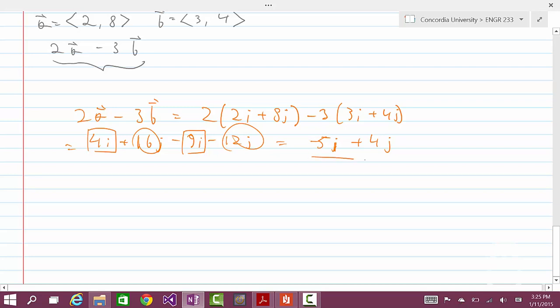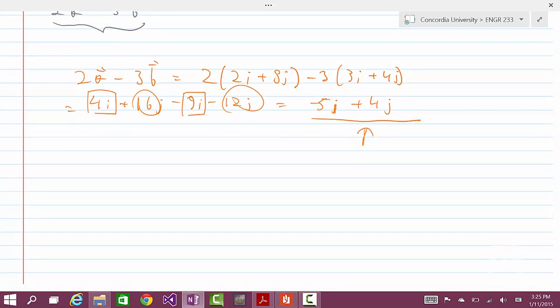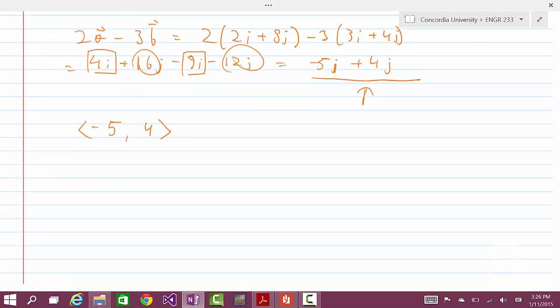So this is our new vector. We need to find the unit vector for this vector. Now we can write this vector in components form if you want another way of seeing it. So our new vector has a negative 5 in the x coordinate and 4 in the y coordinate.